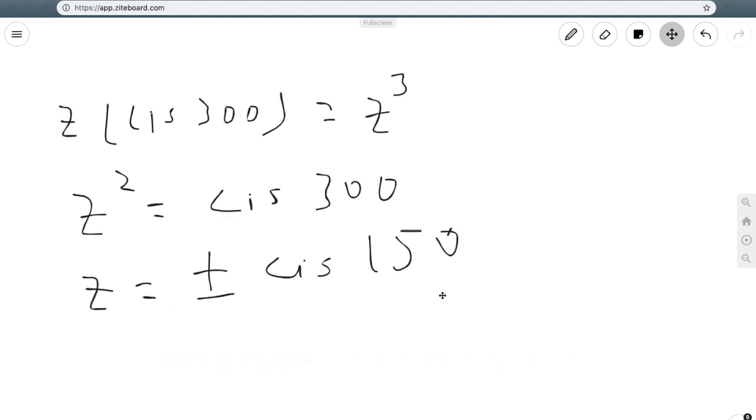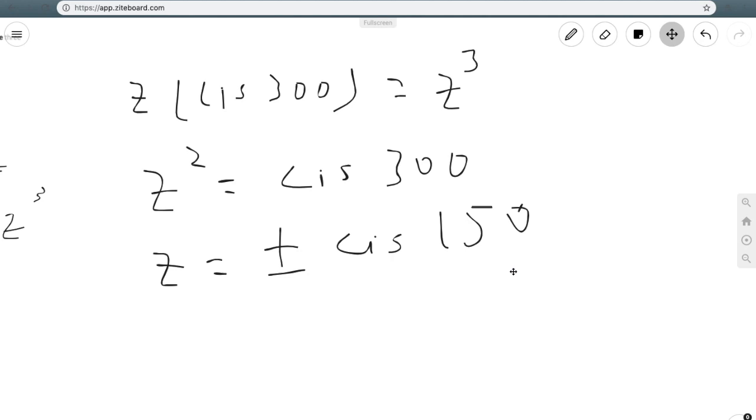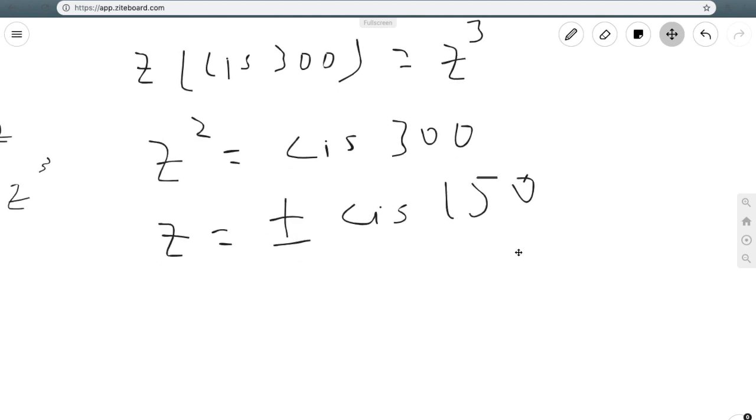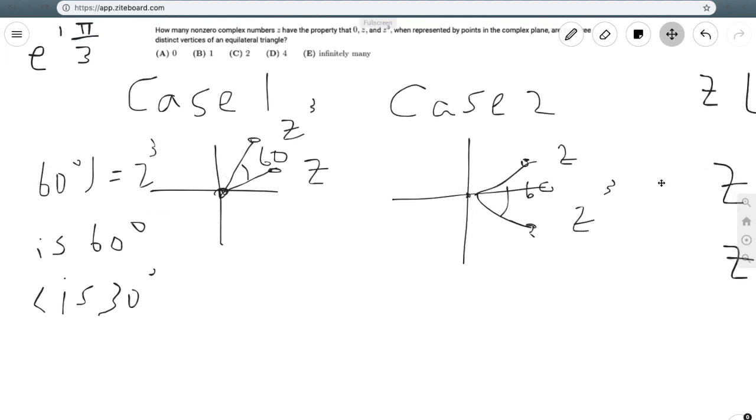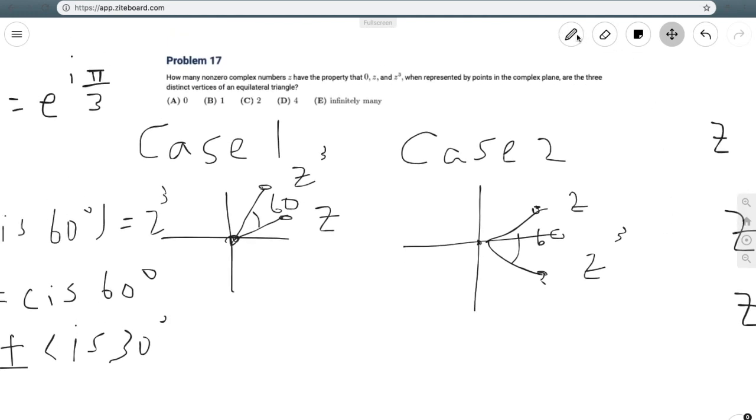And so, in this case, I see that I have four solutions. The four solutions I have are z equals plus or minus cis 150. And then I also end up having z equals plus or minus cis of 30 from the first case. So, considering these four solutions, and I can tell they're all distinct, I see that the answer to this problem is indeed d, which is 4.